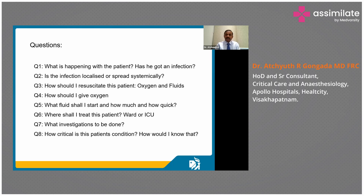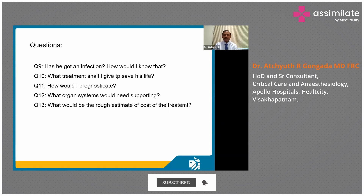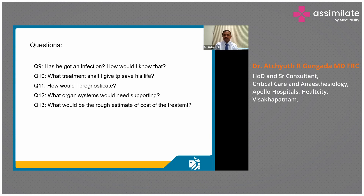How critical is the patient's condition and how would we assess that? If there is an infection, how would we confirm it, and what treatment will save his life? Can we prognosticate the condition for the family? What organ system support will be needed so we can prepare the unit? And finally, what is the rough estimate of cost so the family can prepare — a question that is also relevant when managing a unit.